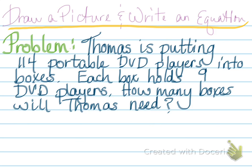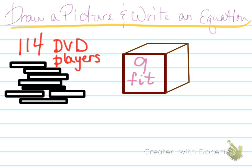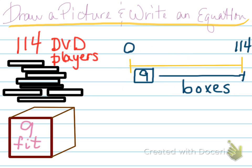Let's try another one. Here's another problem. Thomas is putting 114 portable DVD players into boxes. Each box holds 9 DVD players. How many boxes will Thomas need? Again, I need to draw a picture that will help me figure out the problem. A picture like this might help me visualize but it doesn't really help me solve the problem. You can see I've got 114 DVD players. I see I have a box that only fits 9 but really that's not so helpful.